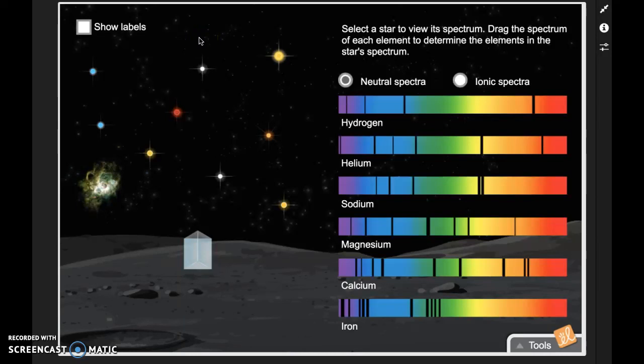All right, first thing I want you guys to do as you're working through this gizmo. You want to show these labels over here. It's going to mention star number one through star number ten throughout a couple different of these activities. So having these labels here is just going to make things easier for you.